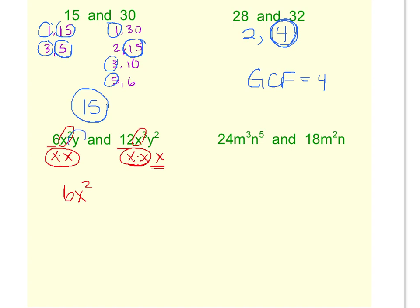Now we look at the y's. We have a y to the first power and a y squared. How many x's do they have in common? They both have a y, but they both don't have a y squared. Y squared would be too big. So we need just a y in our GCF. So our greatest common factor is 6x²y. You just go through the number, then each variable to kind of build your GCF.